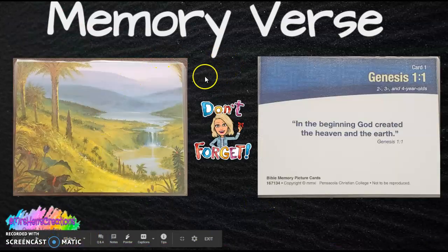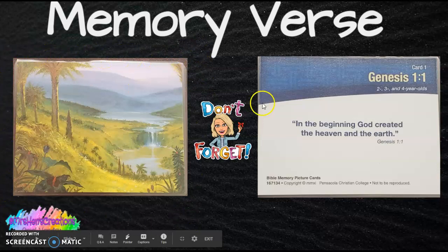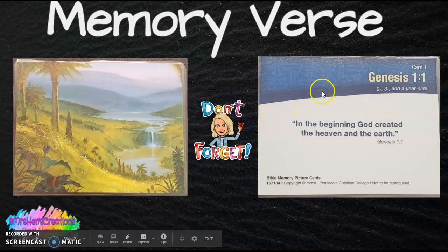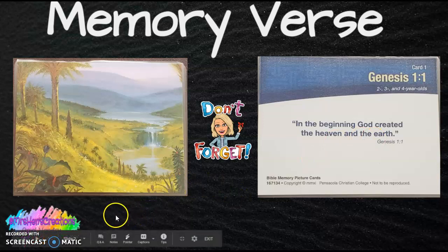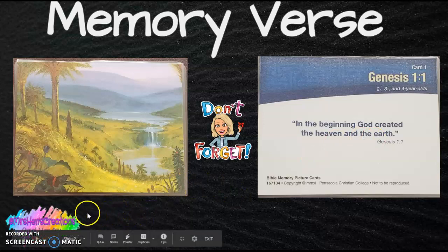So our memory verse for the week — and I know that the K4 babies have these cards — but we're going to use the scripture for K3 and K5. And it's Genesis 1:1: "In the beginning, God created the heaven and the earth." So just try to say that with your babies at least once a day. And if you need to pull this file back up for reference, you surely can.